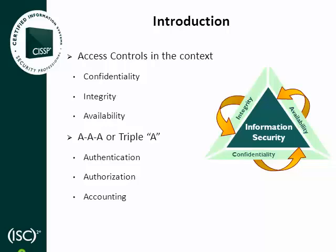As with all other domains, my preview of Access Controls will be in the context of the three security principles of the CBK: Confidentiality, Integrity, and Availability, more commonly referred to as CIA. This domain places an emphasis on confidentiality, as sensitive and critical information must be protected from unauthorized and improper disclosure. Access Control measures focus primarily on preventing unauthorized access to data and systems in order to prevent improper disclosure.